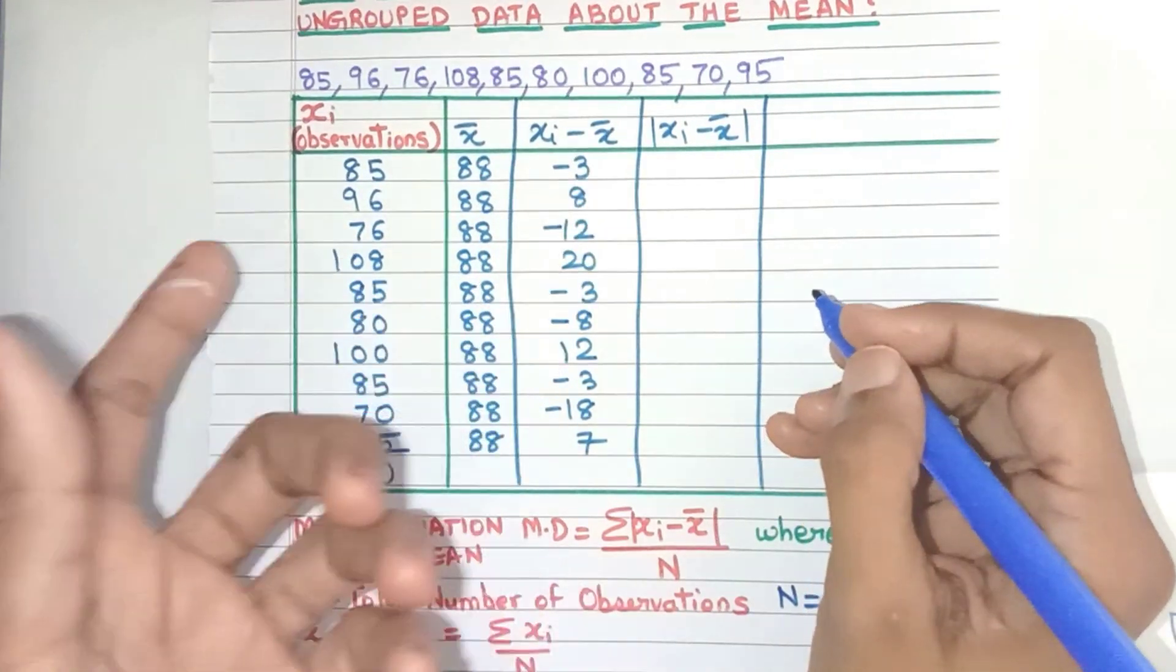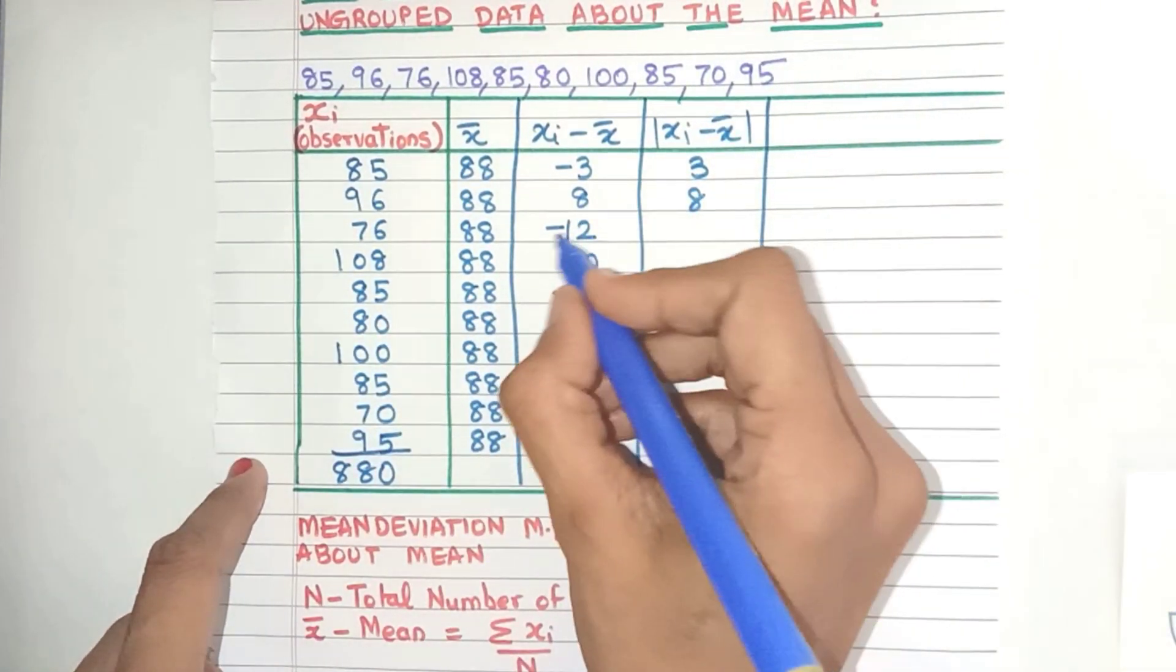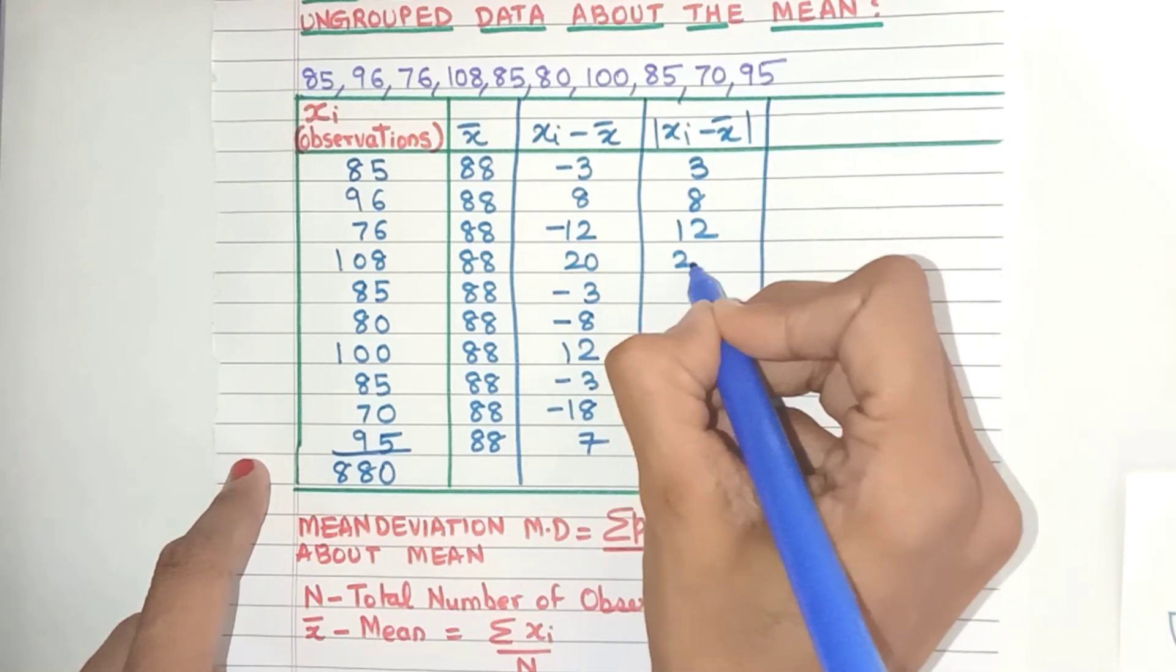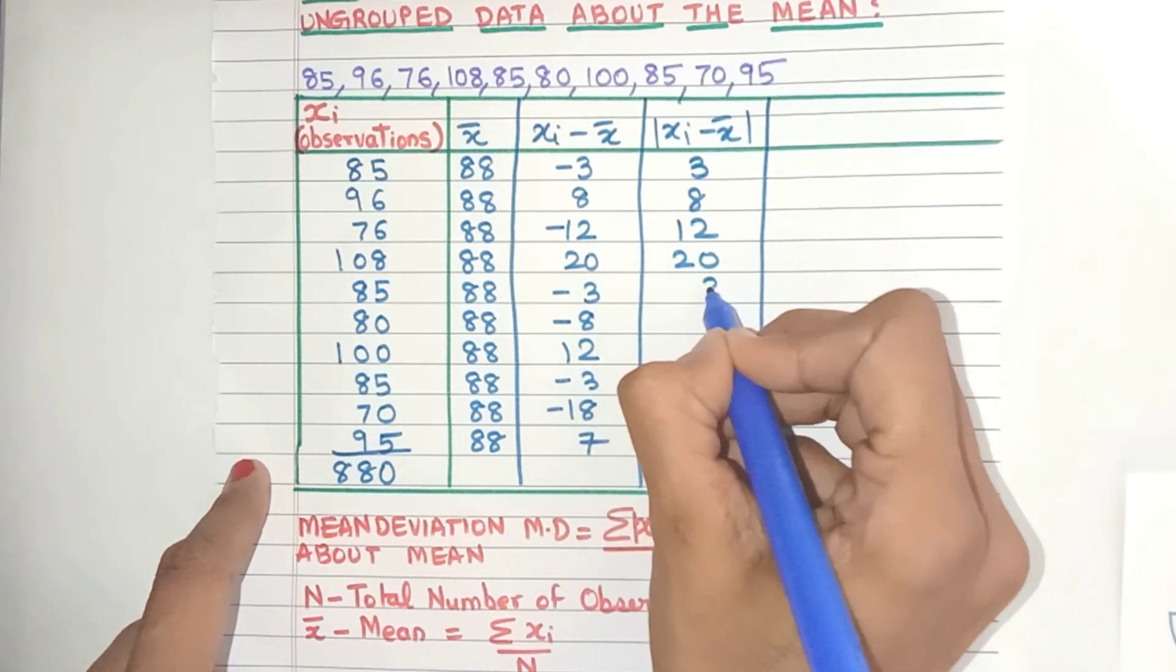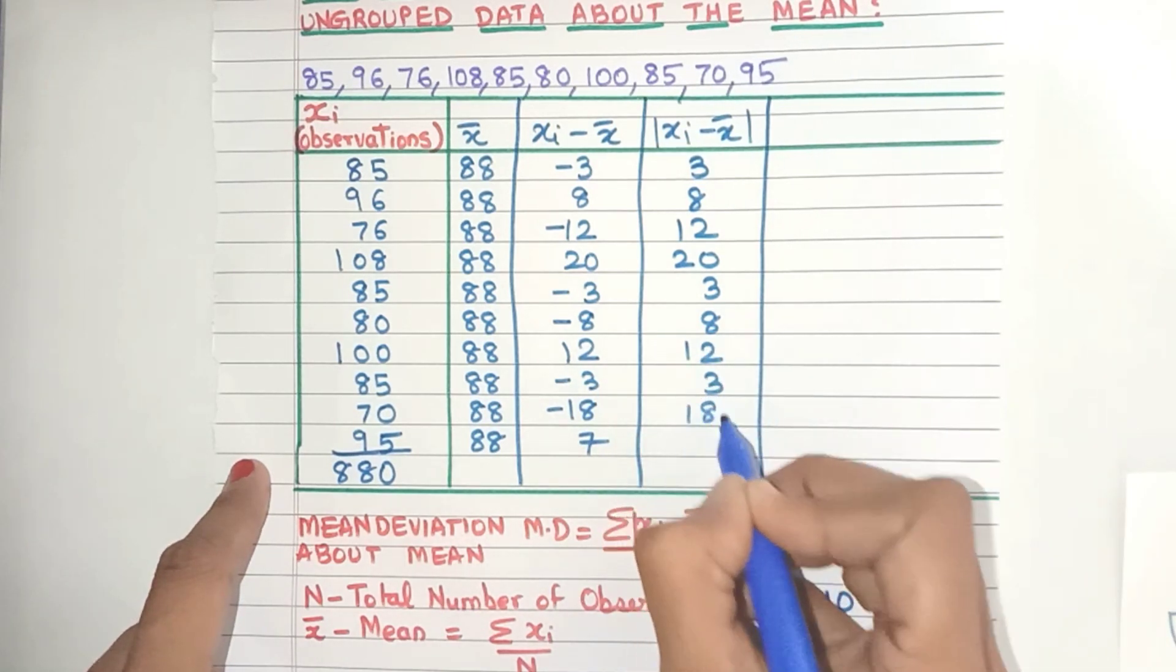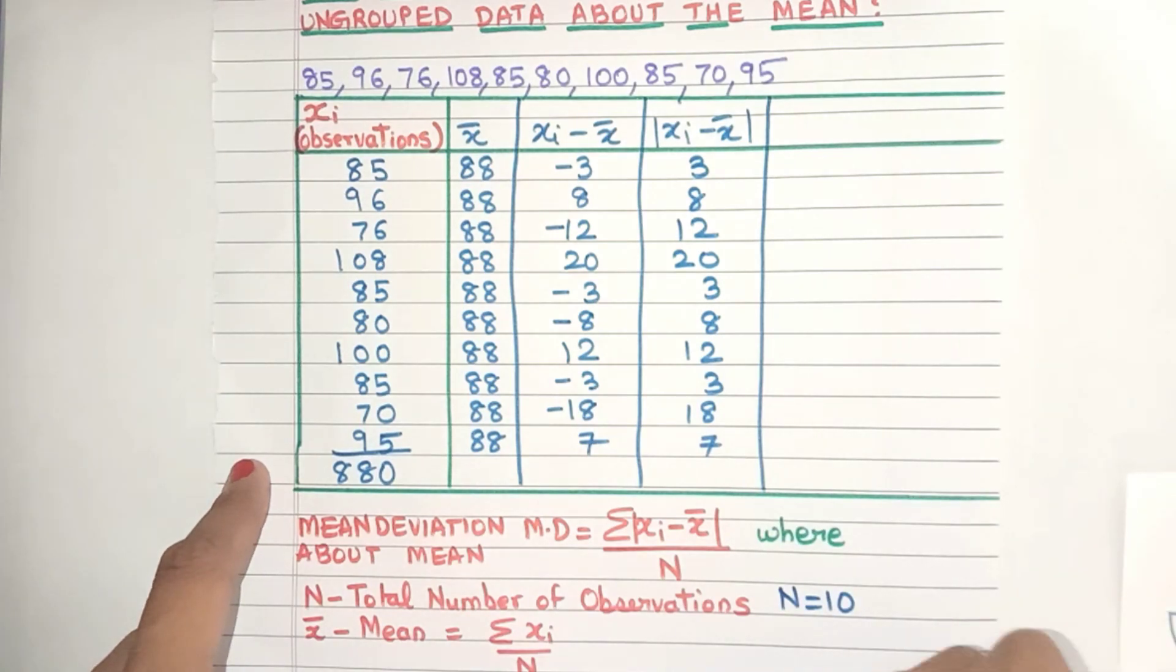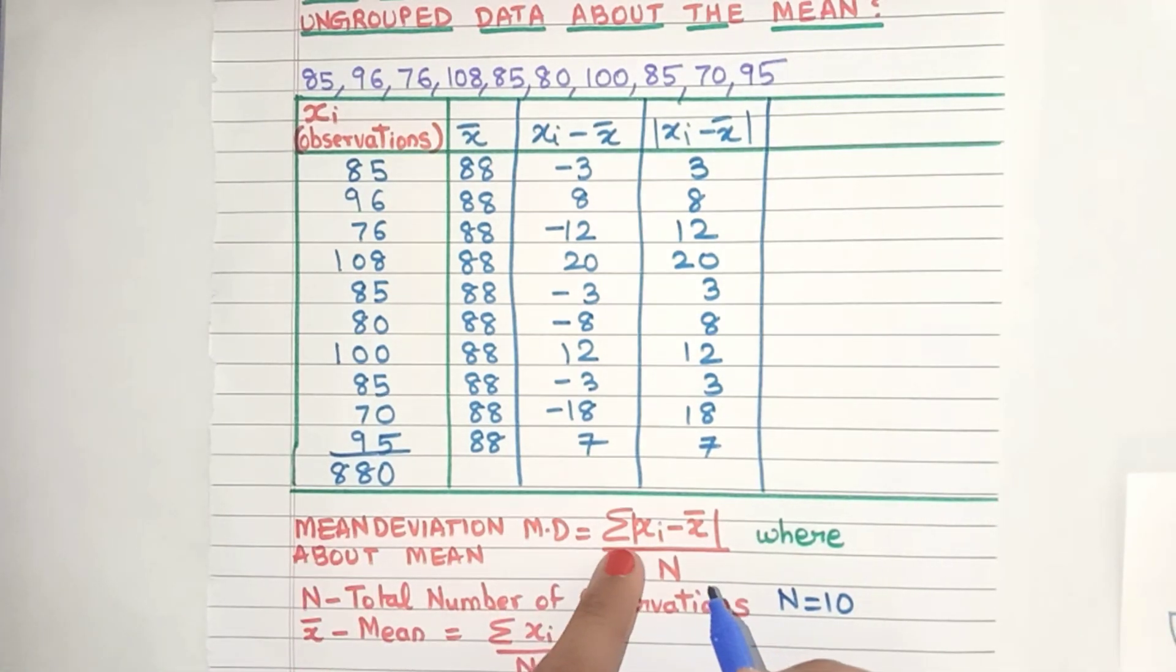So let's make the next column for mod of xi minus x̄. Mod of minus 3 will be plus 3. Mod of 8 will remain 8. So this way, minus 12 will become 12. This will remain 20. This will become 3, 8, 12, 3, 18, and 7. Here also make sure you're writing the digits one below the other. Now let's see what we need next. Yes, we need sigma of this mod of xi minus x̄.